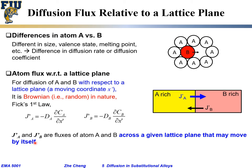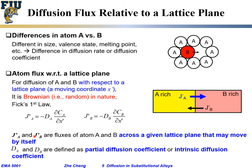Even though the bus (lattice plane) is moving, you can still count how many atoms pass in each direction — that's the flux with respect to your reference frame within that moving bus. D_A and D_B are defined as the so-called partial diffusion coefficients, or intrinsic diffusion coefficients. 'Intrinsic' means these are totally due to thermal vibration and random Brownian motion.